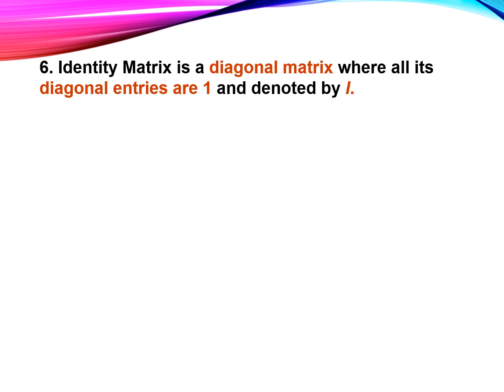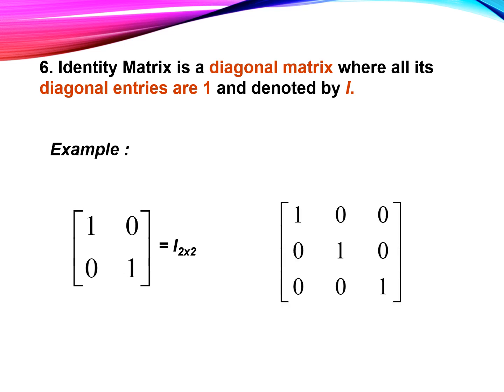Number six, identity matrix. An identity matrix is a square matrix whose elements on the leading diagonal are all ones and the other elements are all zeros. For example, this one is an identity matrix 2 by 2, and this one is an identity matrix 3 by 3.